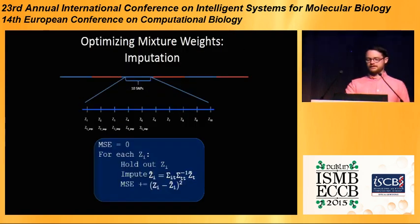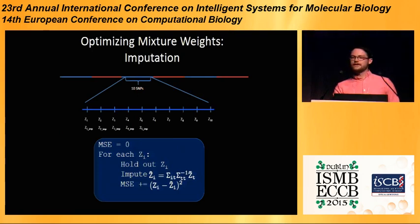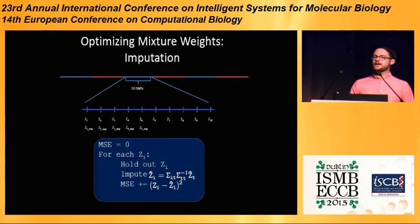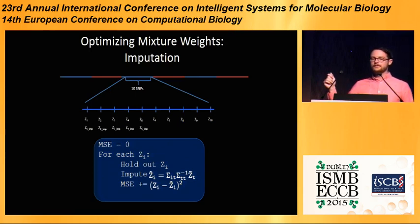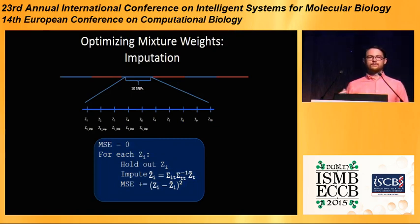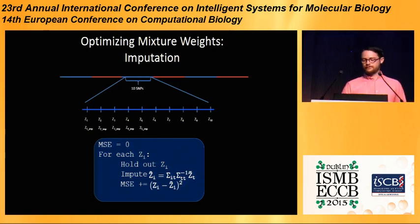That looks something like this: for each window of, say, 10 SNPs, you hold out each of the observed z-scores one at a time. You drop Z1, then impute Z1 using Z2 through Z10, and then compute the difference between the estimated Z1 and the original Z1, and then repeat that for every step.